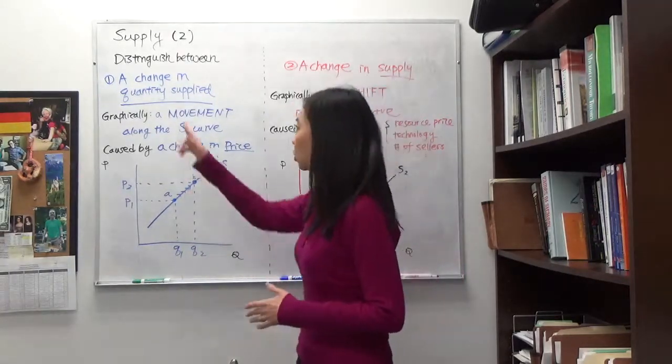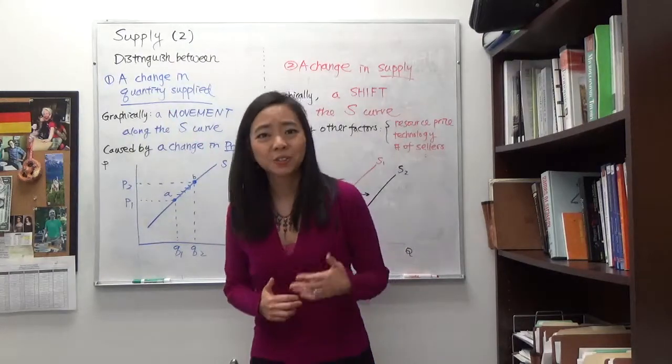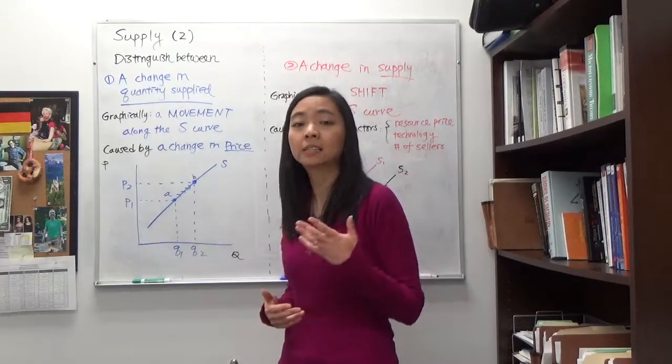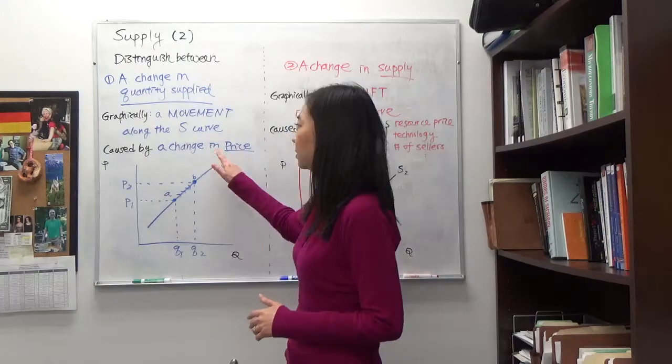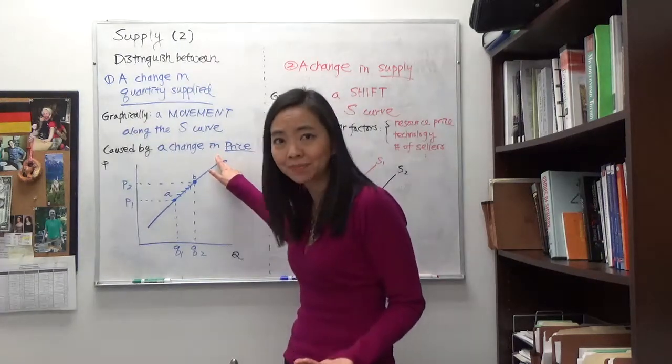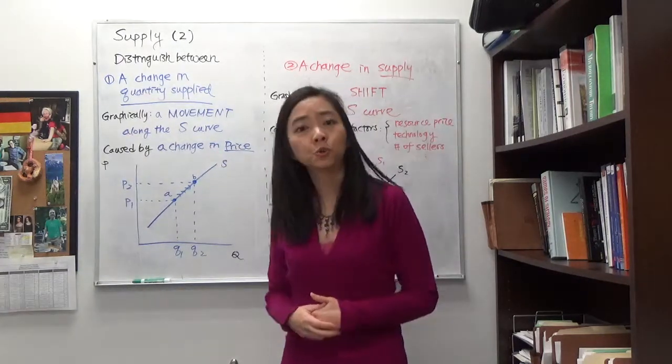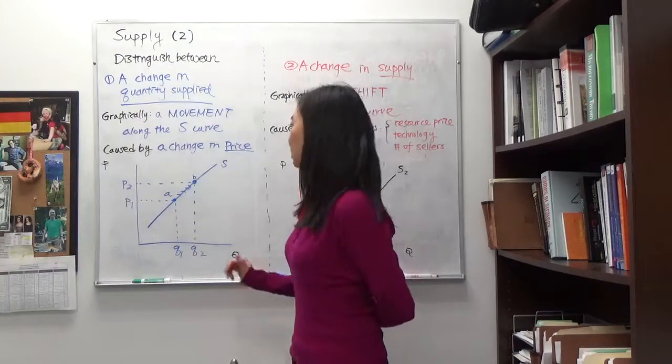So we're going to start with a change in quantity supplied. A change in quantity supplied is caused by a change in price, and price only. And graphically, you're going to observe a movement along the same supply curve.